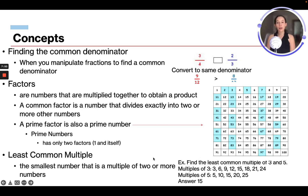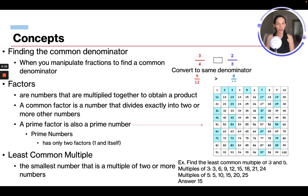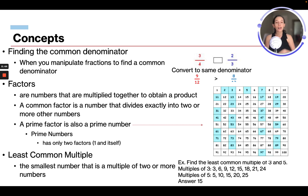Least common multiples — this is the smallest number that is a multiple of two or more numbers. For example, find the least common multiple of 3 and 5. Multiples of 3 are: 3, 6, 9, 12, 15, 18, 21, 24 — so 3 times 1 is 3, 3 times 2 is 6, and so on. Multiples of 5 are: 5, 10, 15, 20, 25. The least common multiple is the lowest number that is a multiple of both 3 and 5, which is 15.